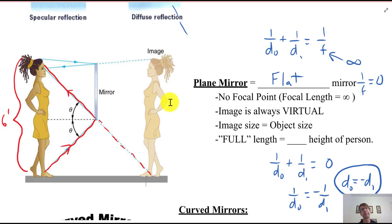You can prove this because if you look in a mirror and take a step back, the image takes a step back. If you take a step forward, it takes a step forward. If you're four feet in front of the mirror, your image is four feet behind the mirror. It doesn't actually exist — it's an optical illusion, a virtual image that you cannot project on a screen.